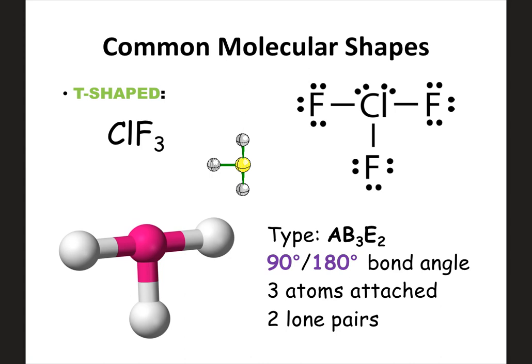T-shaped is a new shape for AP. This is when you have three attached to the center but two lone pairs on the center. We started with three attached zero lone, then three attached one lone, and now three attached two lone pairs — that's T-shaped. It has multiple bond angles: the two fluorines at the top would have a 180-degree angle, while the fluorine at the side to the chlorine would be a 90-degree angle. It forms like a perfect T.